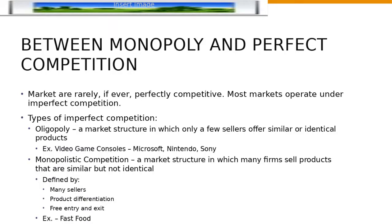Hi, all. Picking off where we left off last chapter, we're going to be talking about monopolistic competition. We talked about monopolies, which were a company which had price-making powers because it was the sole provider of a good. And we talked about perfect competition where we had a lot of buyers and a lot of sellers, and ultimately what that meant was that no one had price-making capacity.